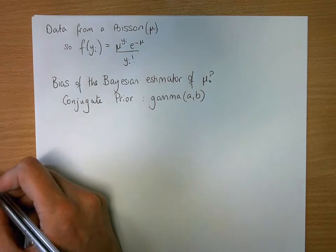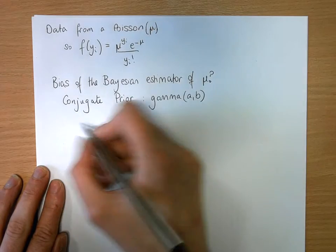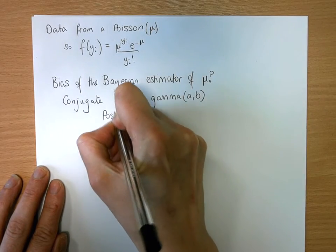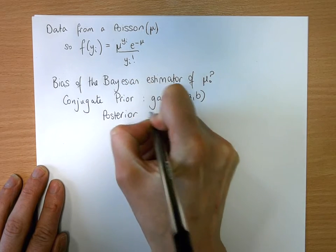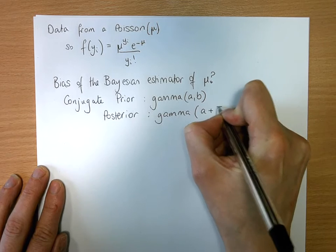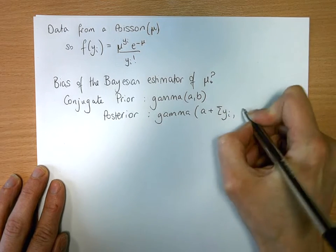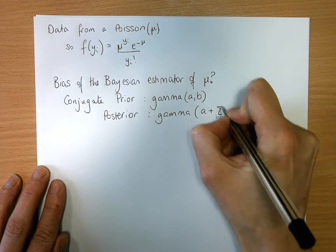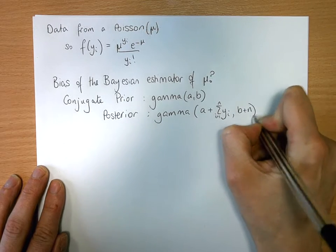And recalling our updating rule, we get our posterior would be a gamma of a plus the sum of yi from i equals 1 up to n, b plus n.